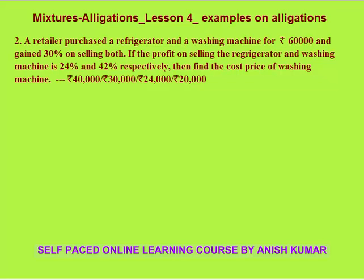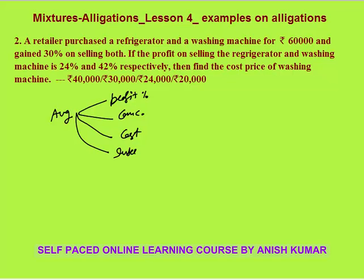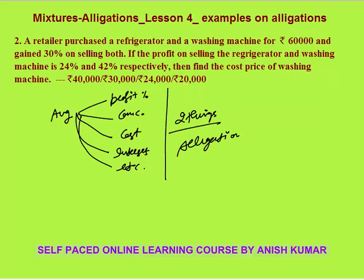How to judge where to apply allegation? Wherever an average is given — average profit percent, average concentration, average cost, average interest, anything — of two things only, we can apply allegation. As simple as this: wherever two things are involved and an average is given, we can apply allegation.